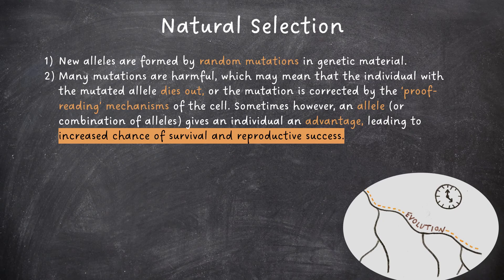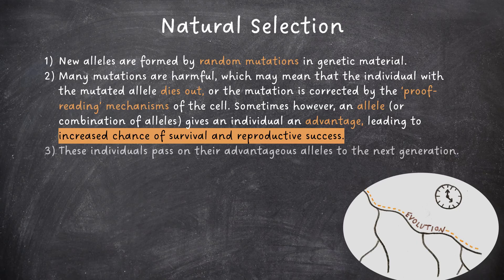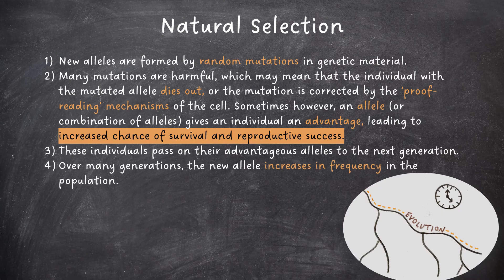Sometimes, however, an allele or a combination of alleles gives an individual an advantage, leading to increased chance of survival and reproductive success. These individuals then pass on their advantageous alleles to the next generation. Over many generations, the new allele increases in frequency in the population.